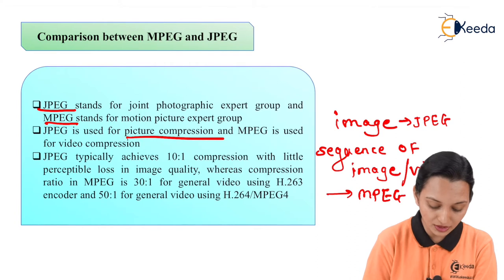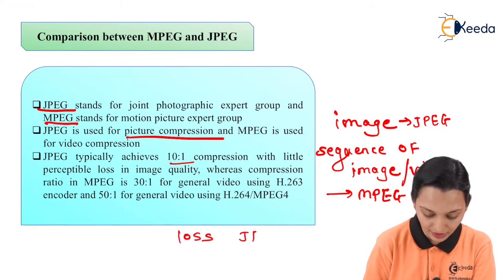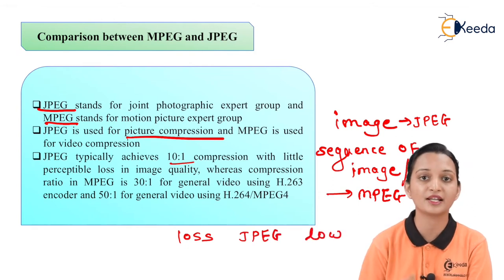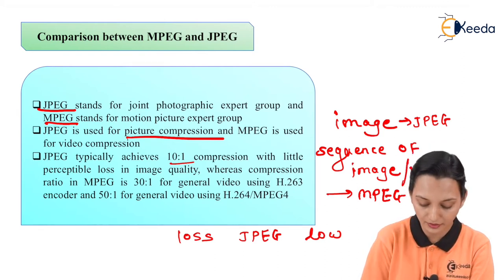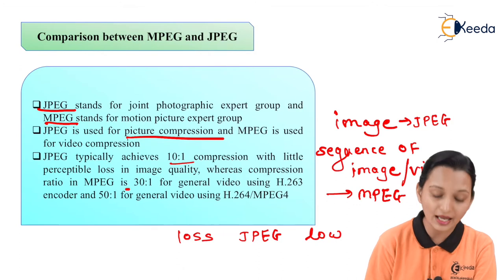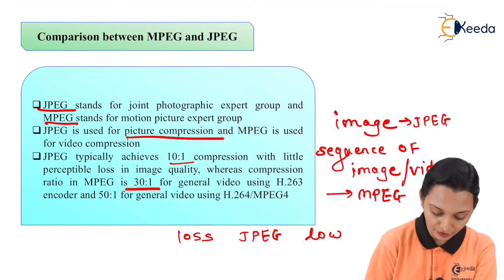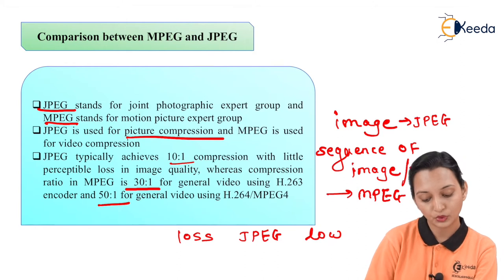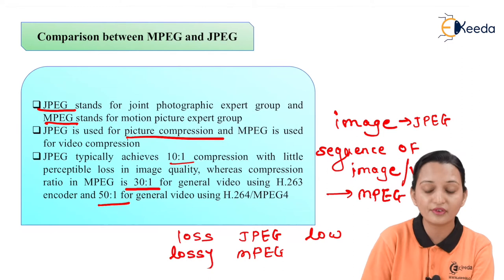JPEG typically achieves a 10-to-1 compression ratio with very little perceptible loss in image quality — the loss of actual data is very low. In contrast, the compression ratio in MPEG is 30-to-1 for general video using an H.263 encoder, and 50-to-1 for general video using H.264 or MPEG-4 technology. This means the data loss in MPEG is very high.